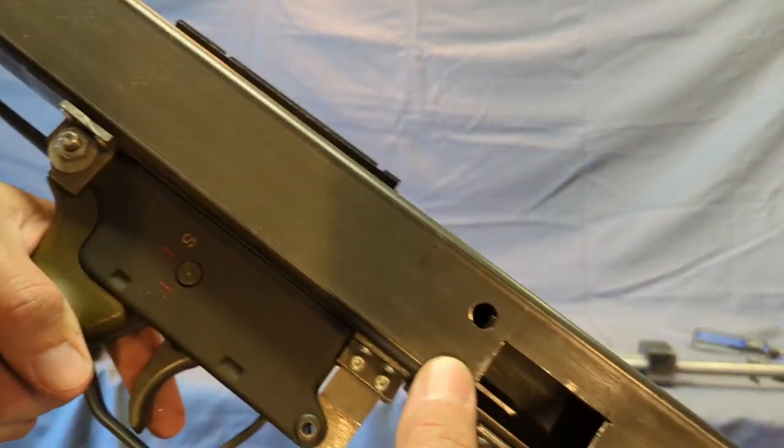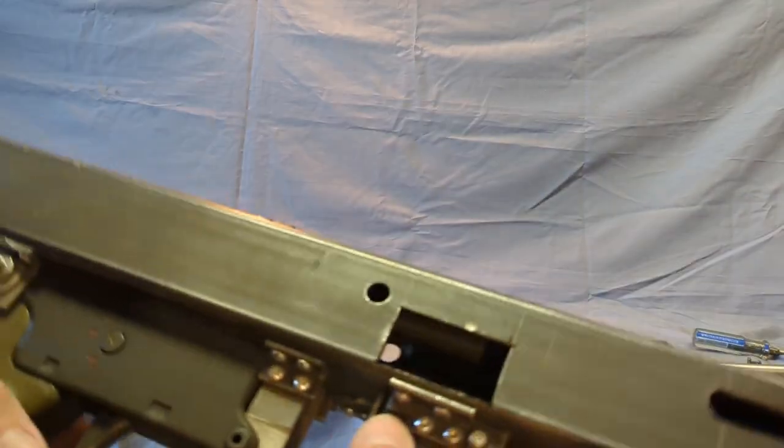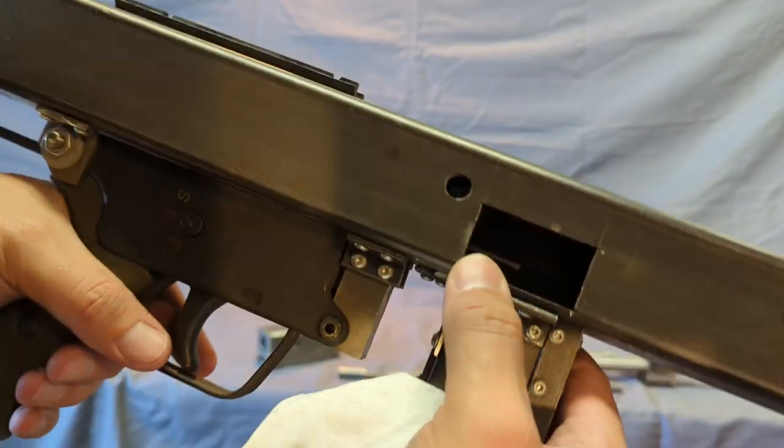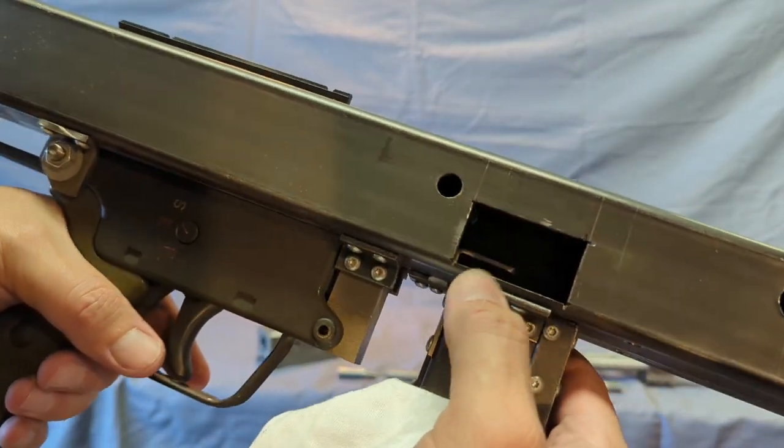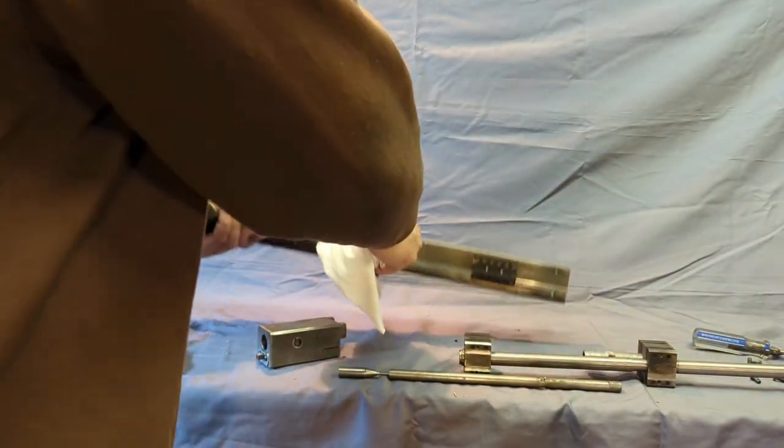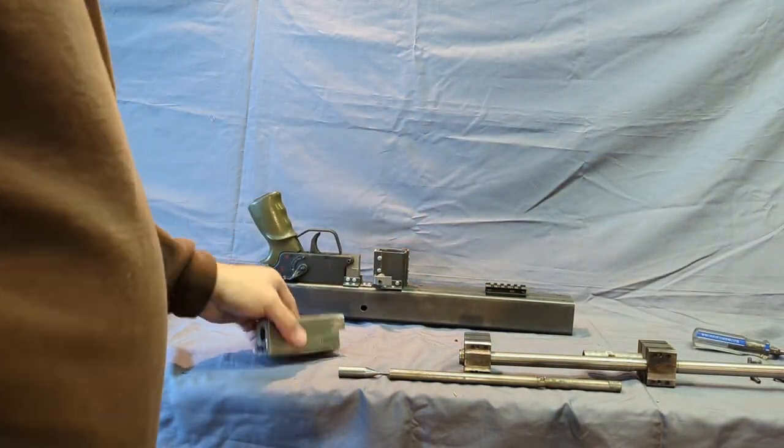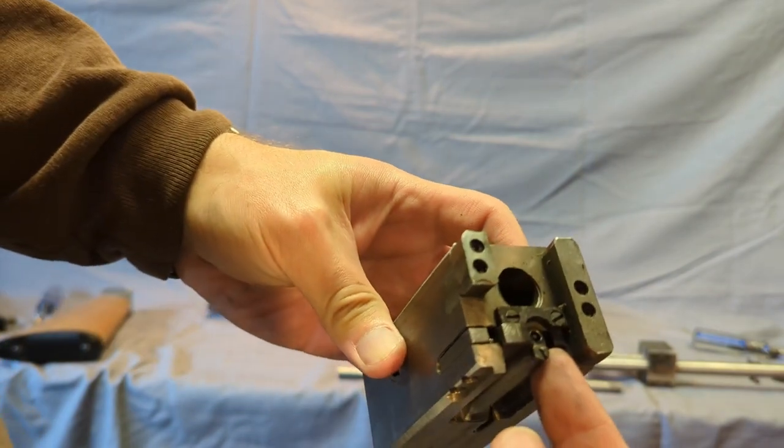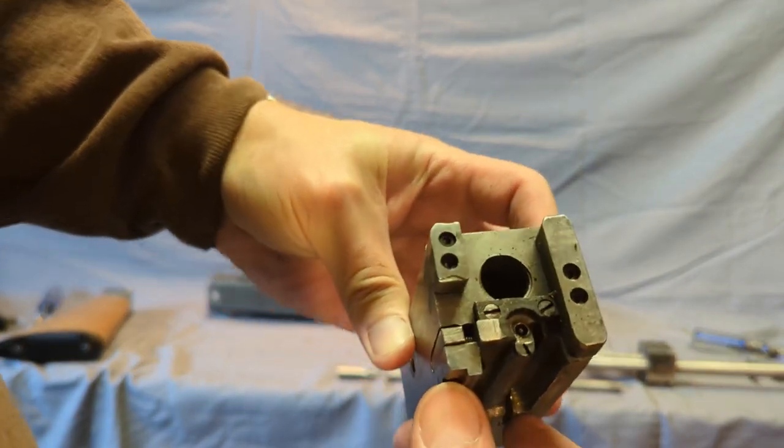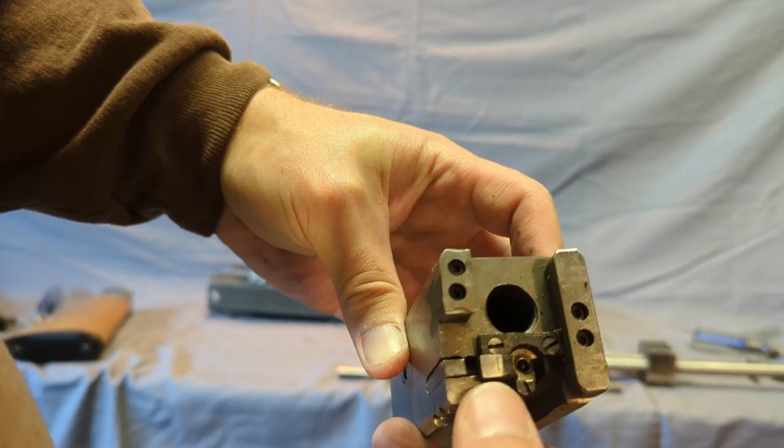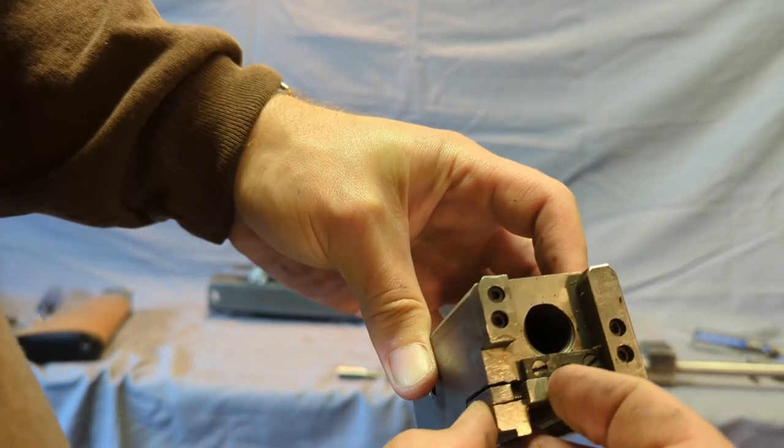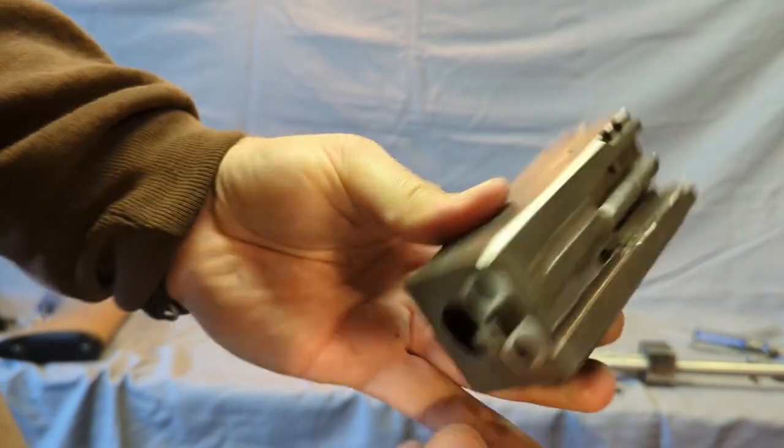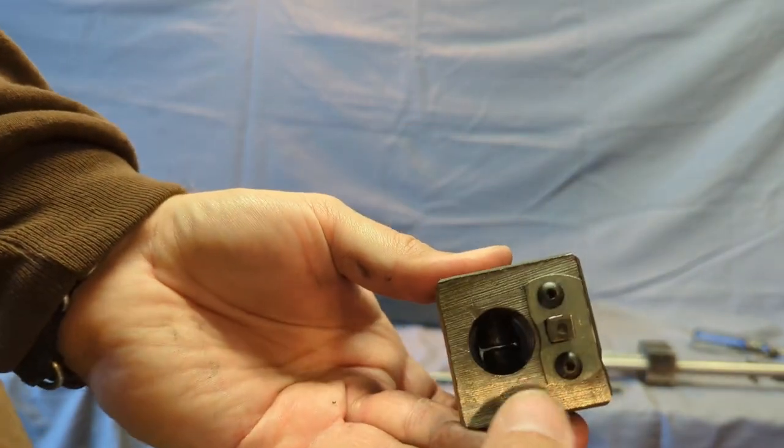So that's how it all locks up inside there. You can probably see it in there. That's the ejector. It rides in this cutout right here and will kick the shell out. So you can see my rudimentary extractor and spring-loaded firing pin back here in the back.